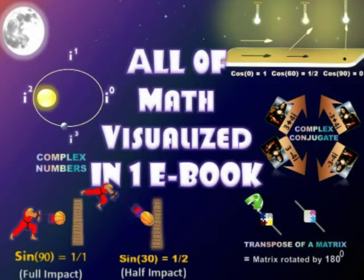What if all the building blocks of math can be visualized in just one e-book? What if someone tells you that i in complex numbers denotes rotation by 90 degrees, i square rotation by 180 degrees, i cube rotation by 270 degrees, and i raised to four a full rotation of 360 degrees? What if complex conjugates were nothing but vertically opposite mirror images of each other? Sin theta was a measure of how much perpendicular two forces or influences are. At 90 degrees the influence is maximum; at 30 degrees the influence reduces to half.